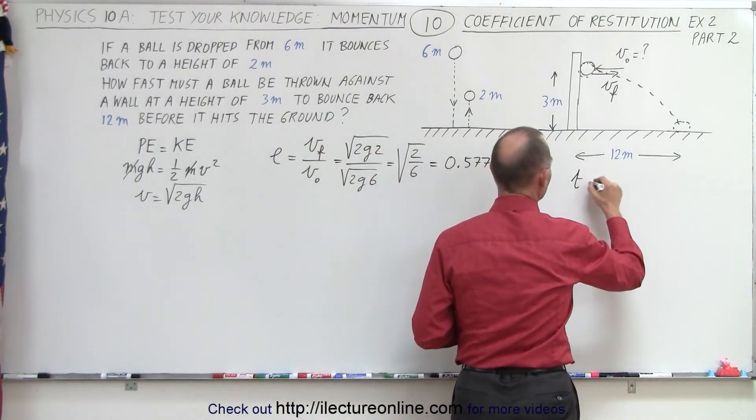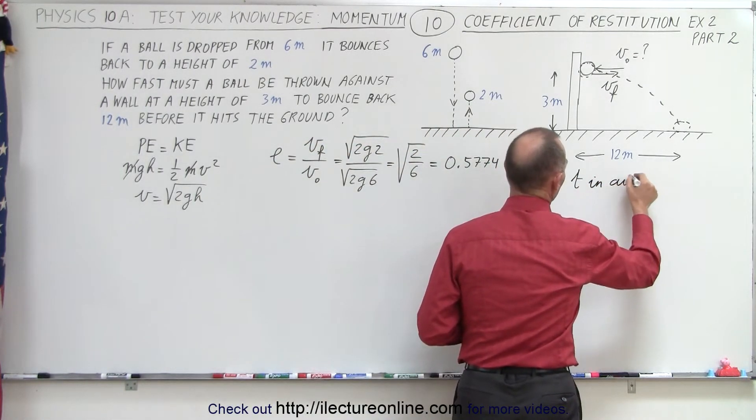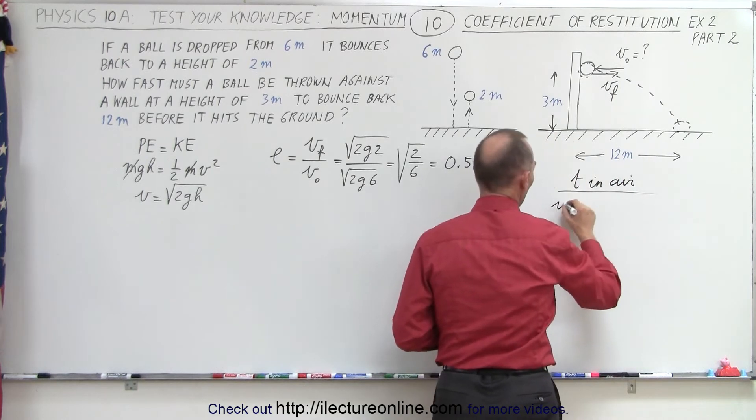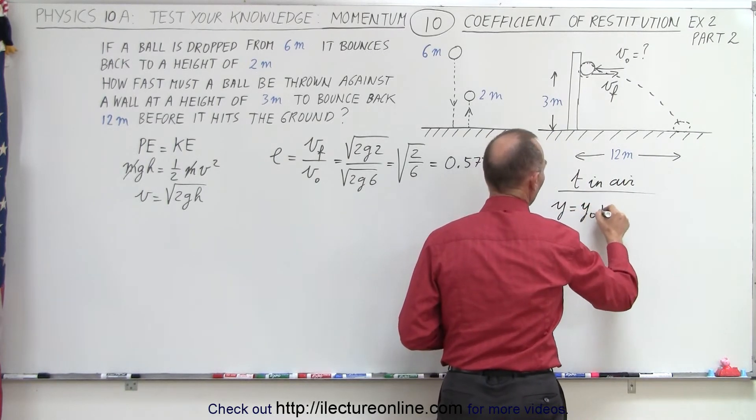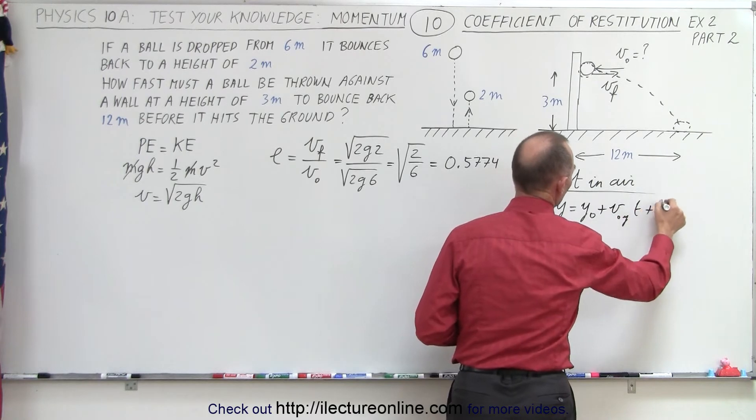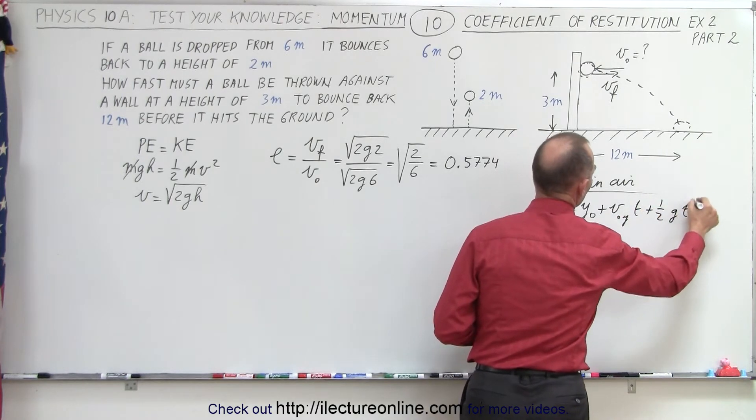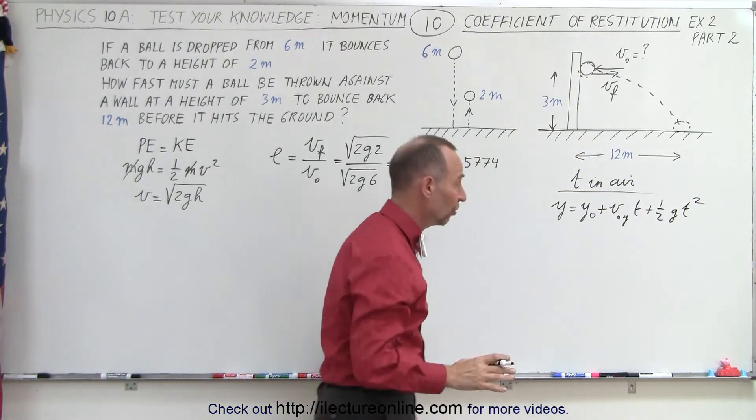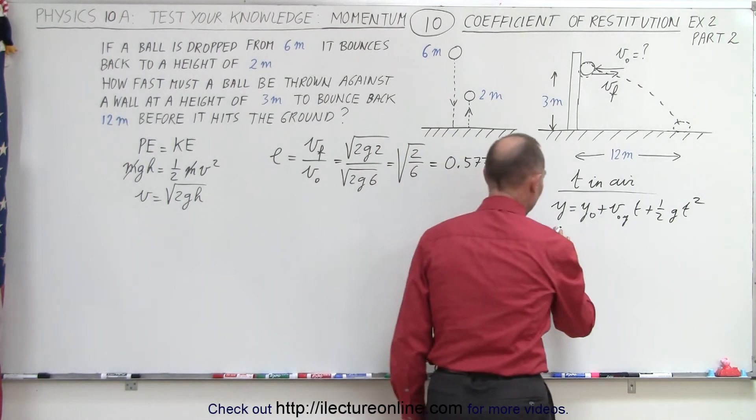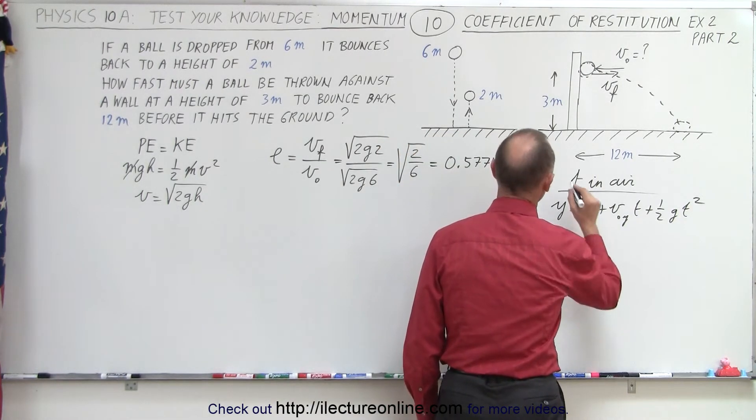And the way we find time in the air is by using the old equation y equals y sub nought plus v sub nought in the y direction times t plus 1 half g t squared. Now, with metric units, it will look as follows. Final height, 0. Initial height, 3 meters. Initial velocity in the y direction will also be 0 because it's thrown horizontally.